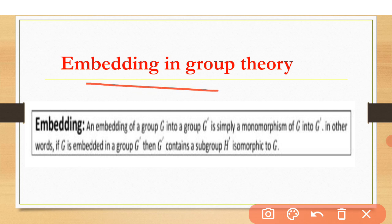Embedding in group theory: 'embed' means to fix. We are going to fix one group into another group. So, embedding of group G into group G prime is simply a monomorphism from G to G prime. Monomorphism means the mapping is a homomorphism — the operator is preserved — and it is also one-to-one.